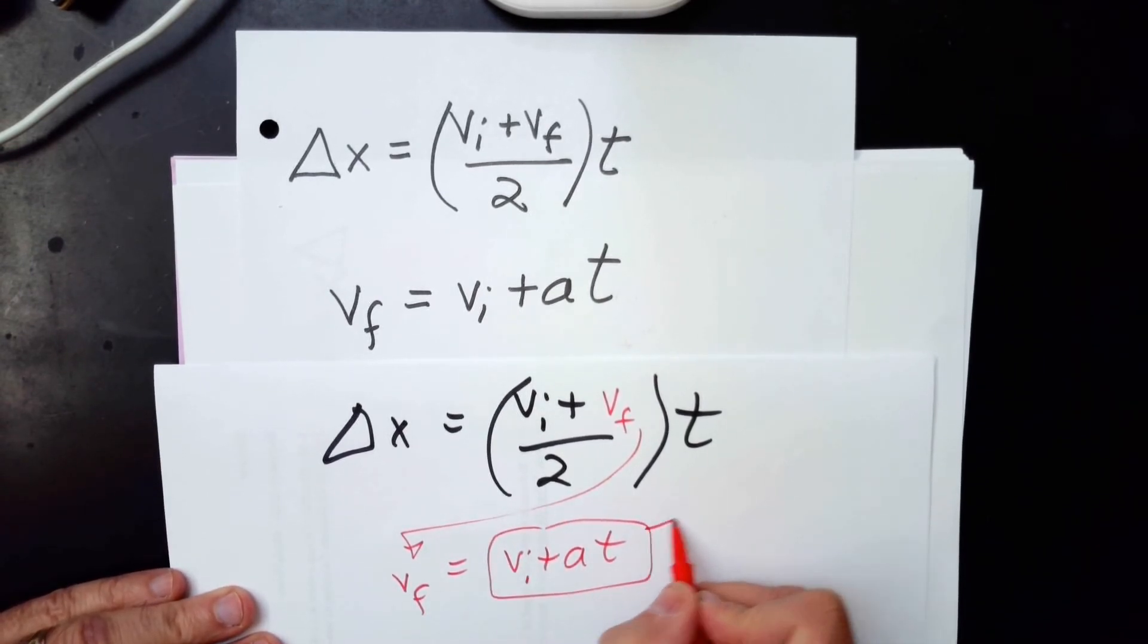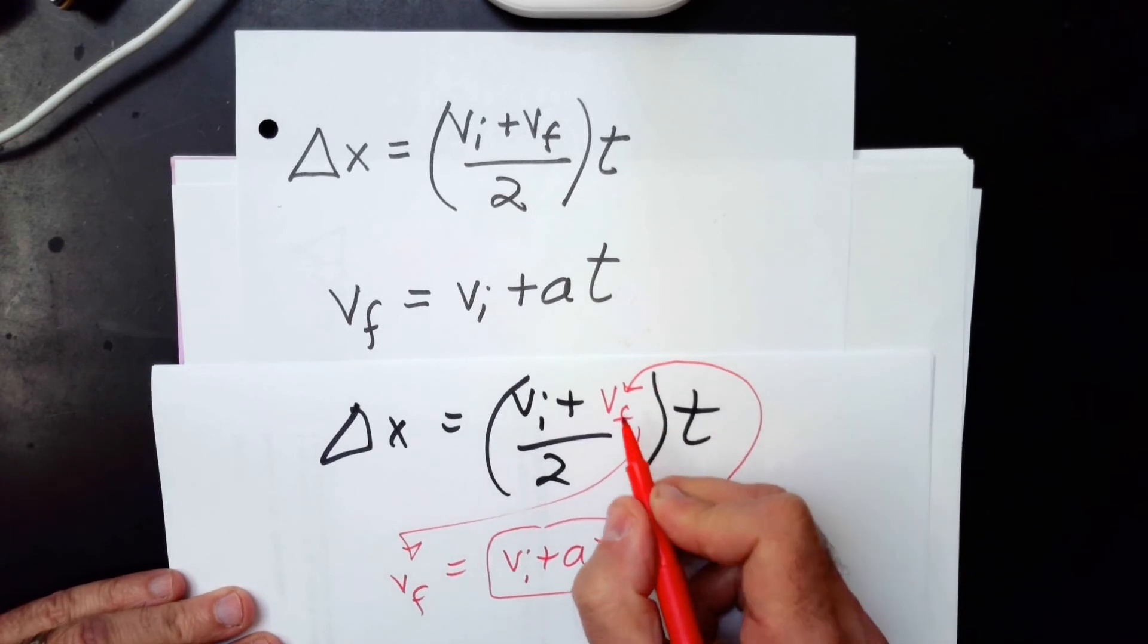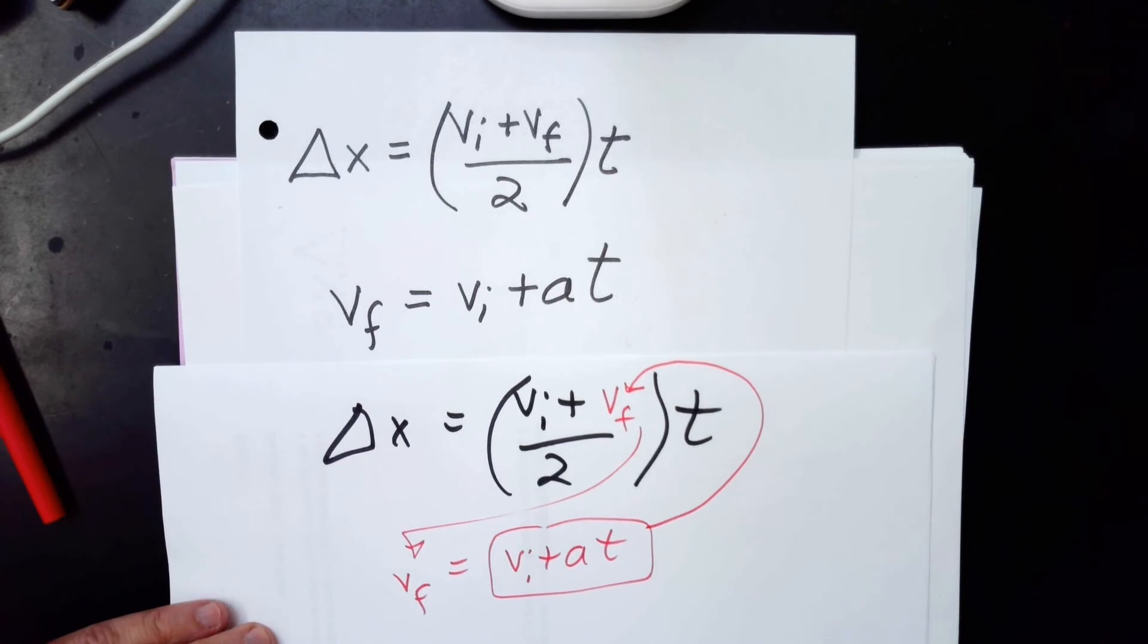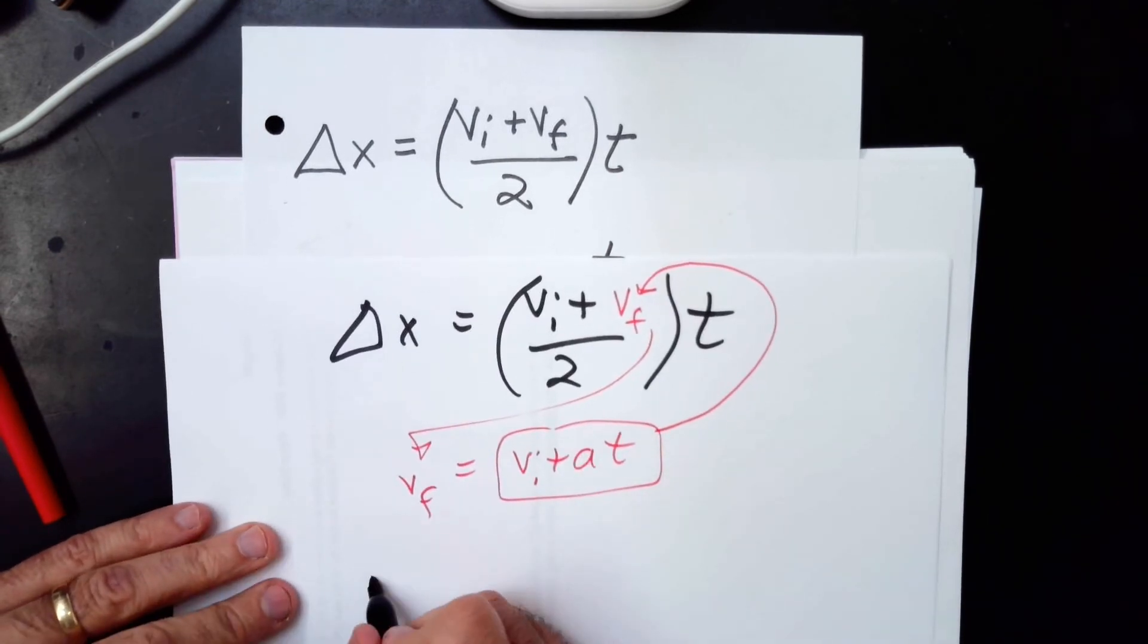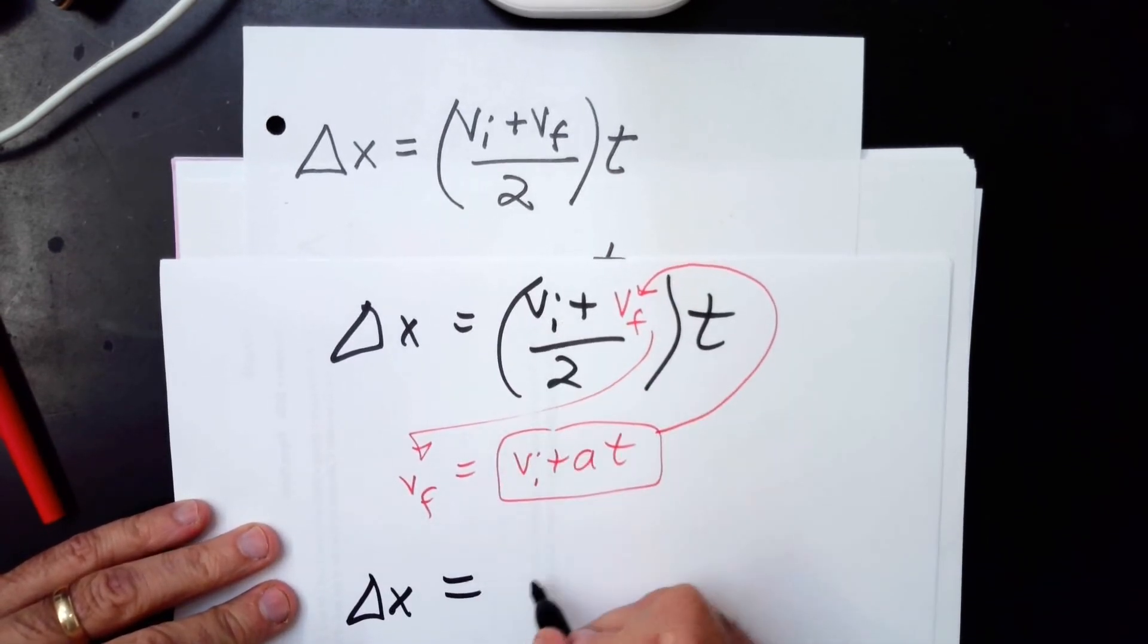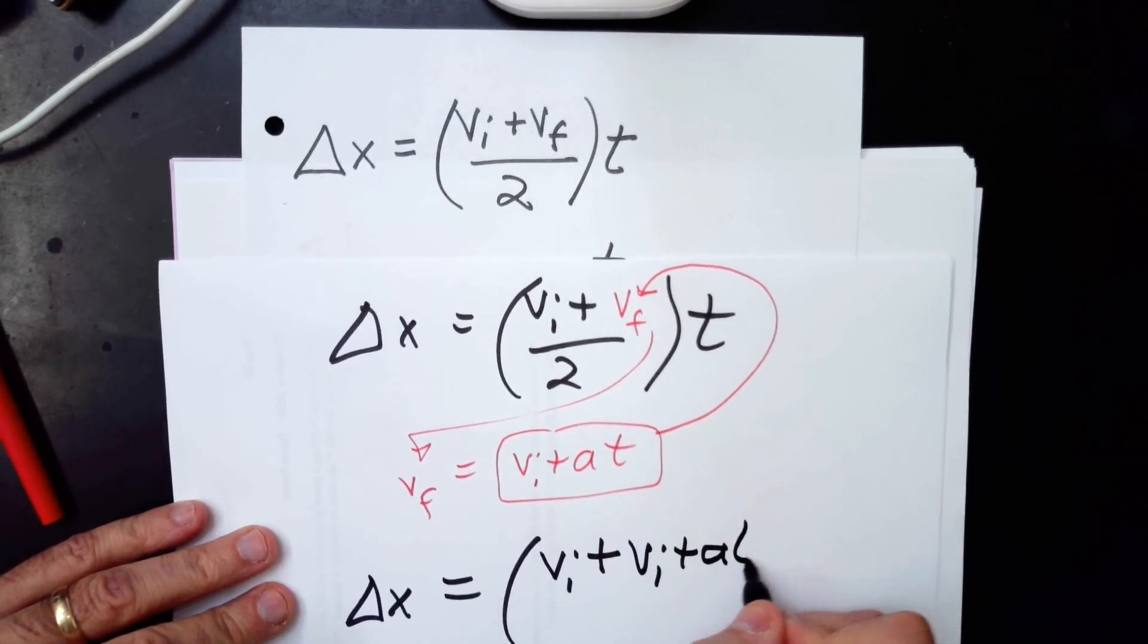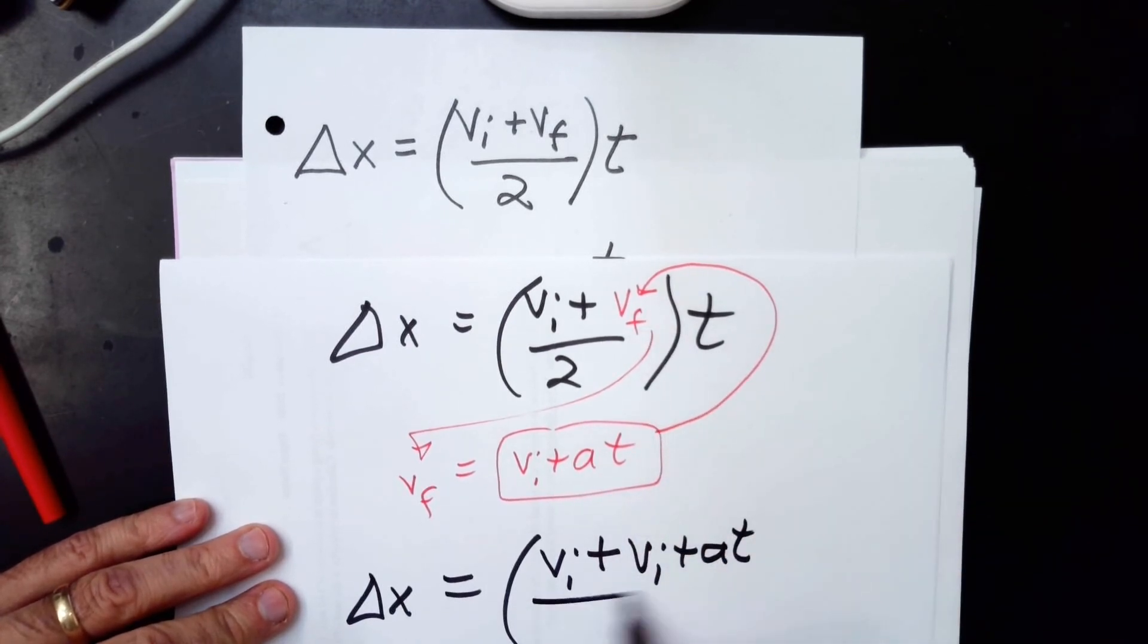So once again, we're going to do a substitution. Vf means the same thing as that. So I'm going to replace that vf with this. Because I want to get rid of it because it's not in the equation, my target equation that I want. So what I get is Δx equals vi. All that's still the same. Vi plus. But instead of vf, I write this. Vi plus at. Okay, I've done the substitution and all the rest is the same. Over 2 times t.